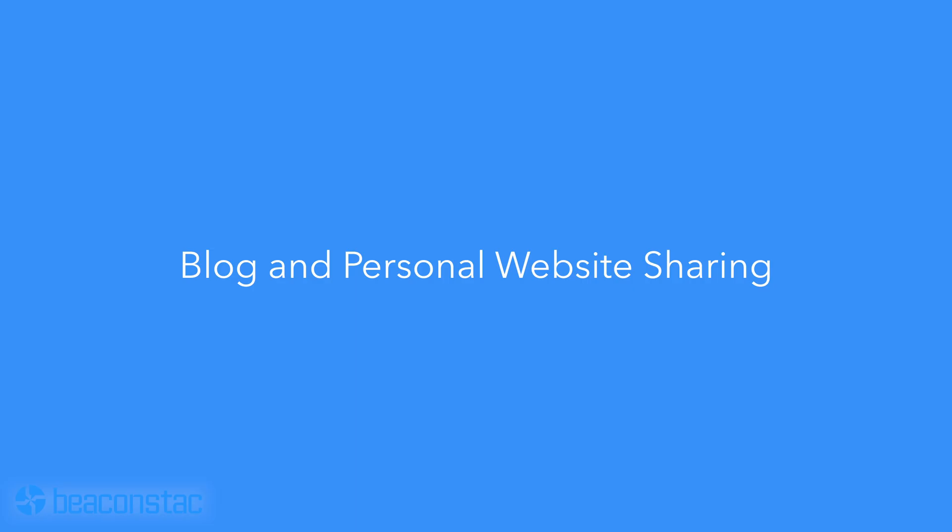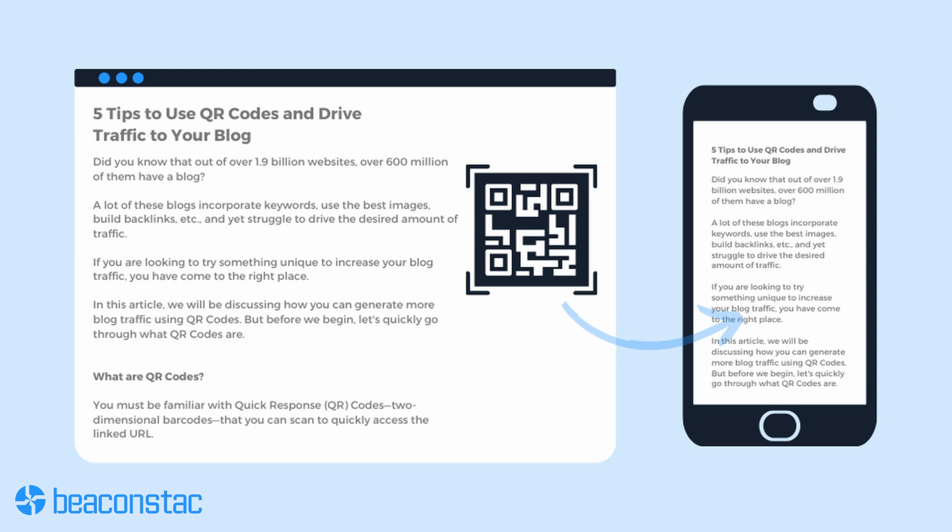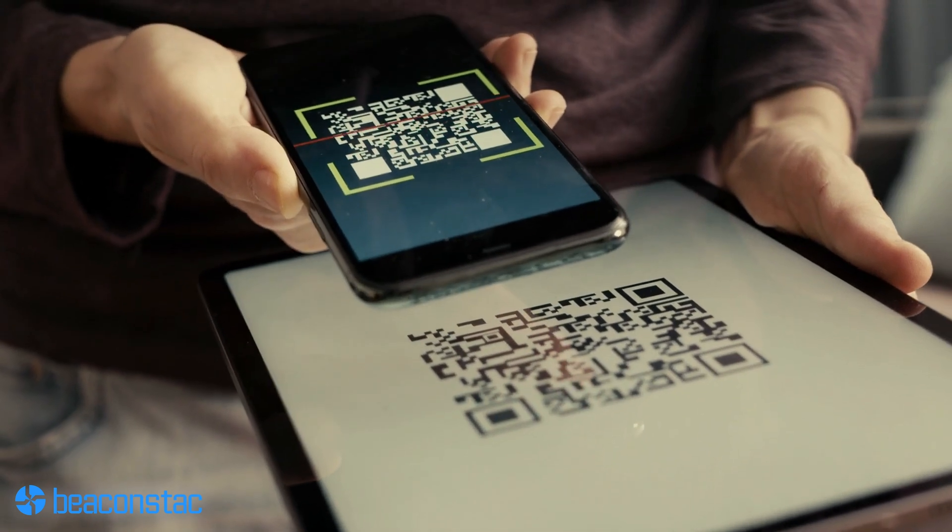Blog and personal website sharing. If you are running a blog, personal website, or portfolio website, you'd want to get in front of as many of your target audience as possible. You can use a URL QR code to invite people to read and interact with your blog while they're on the go. Just link your URL into a QR code and patch them on posters, magazine pages, brochures, or any other print media. Networking events are also a great way to share your blog or website via QR codes — instead of asking people to type a lengthy URL, they can just scan your materials.